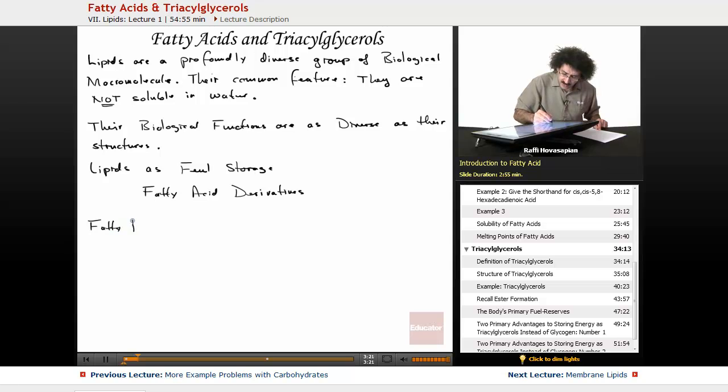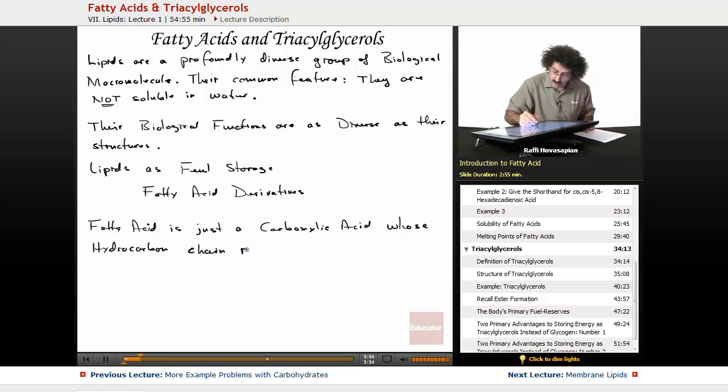So a fatty acid is just a carboxylic acid whose hydrocarbon portion, or chain, runs from 4 to about 36 carbons. This includes the carbonyl carbon, the COO carbon.